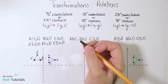Plotting the new image: A prime at (-4, -2), B prime at (-2, -1), and C prime at (-2, -3). Let's connect the dots. You'll notice this just went around 180 degrees — either counterclockwise or clockwise — to become this new image.